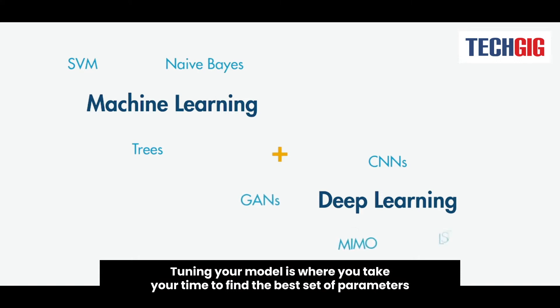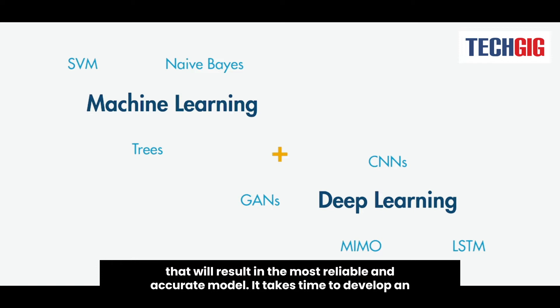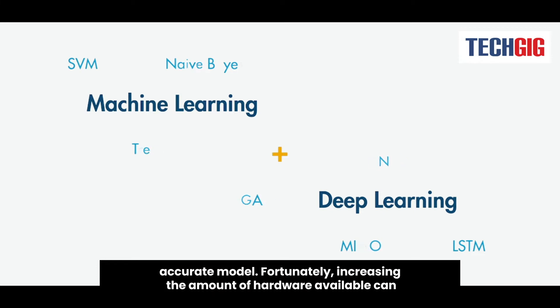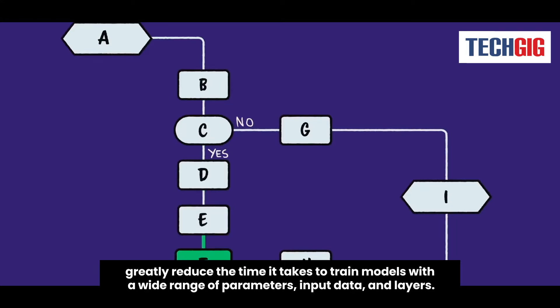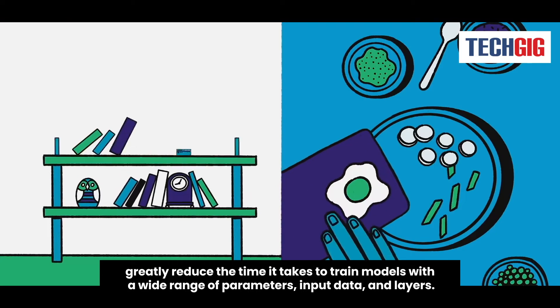Tuning your model is where you take your time to find the best set of parameters that will result in the most reliable and accurate model. It takes time to develop an accurate model. Fortunately, increasing the amount of hardware available can greatly reduce the time it takes to train models with a wide range of parameters, input data, and layers.